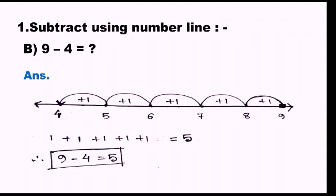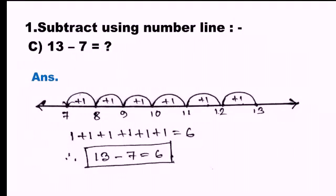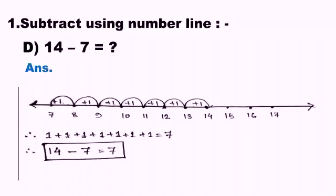Now question 1c: subtract 7 from 13 — a slightly bigger number. I have started with the subtrahend, which is 7, and I have to stop at 13. From 7 to 13, how many steps have we moved? Whether you go 7 to 13 or 13 to 7, the count is 6 jumps. So 13 minus 7 equals 6.